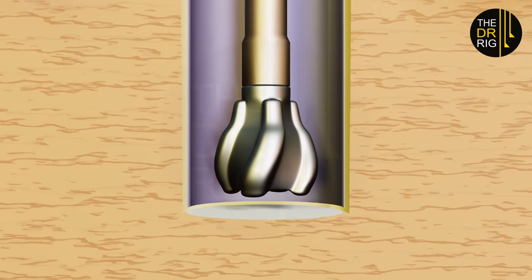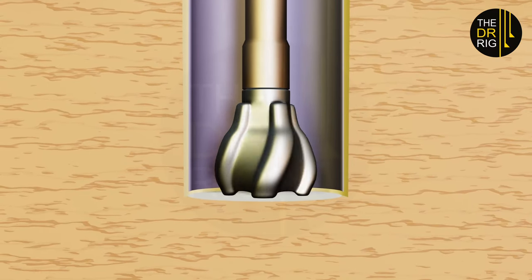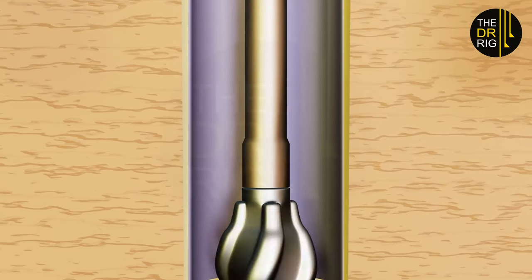The force required for the bit cutters to engage the formation is obtained from the weight of the steel pipes which are called the drill string.